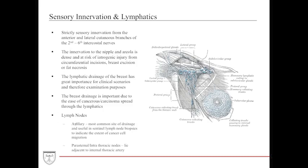The axillary nodes are the most common site of drainage and are useful in sentinel lymph node biopsies, especially when investigating the extent to which cancer cells have migrated. The parasternal or intrathoracic nodes lie adjacent to the internal thoracic artery along the sternum, and provide an avenue through which blood and possible malignancies can travel from one breast across to the other.